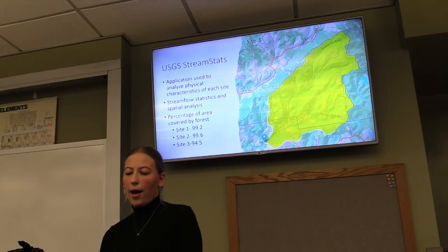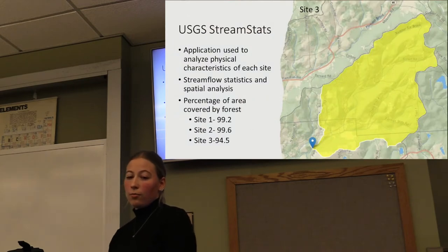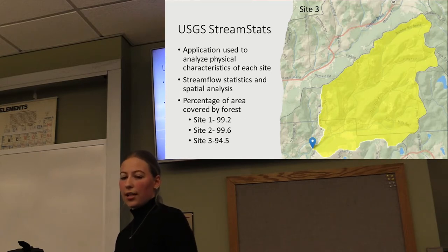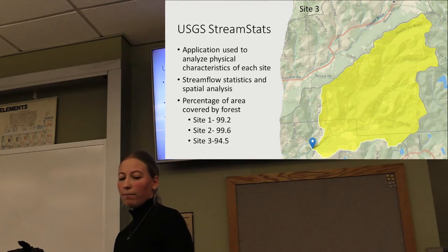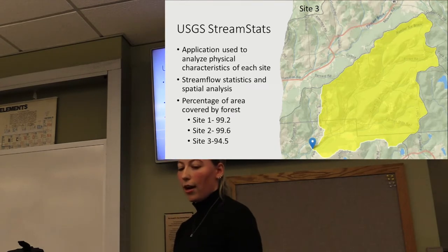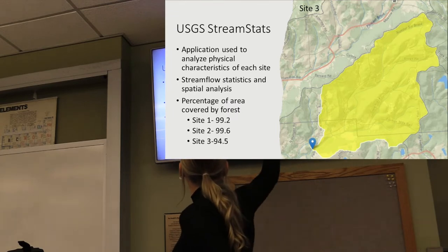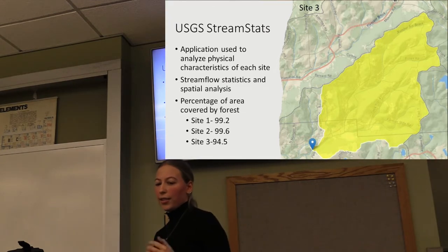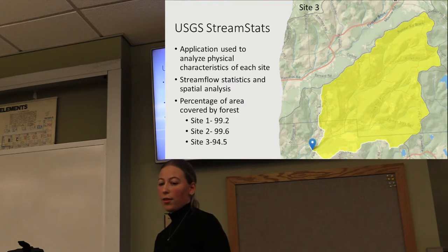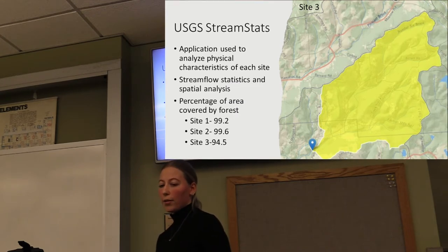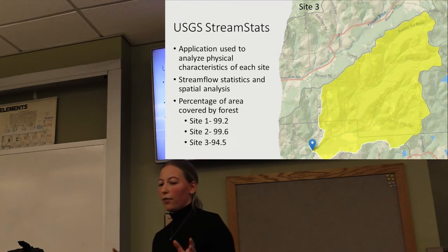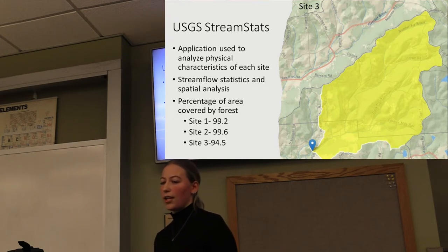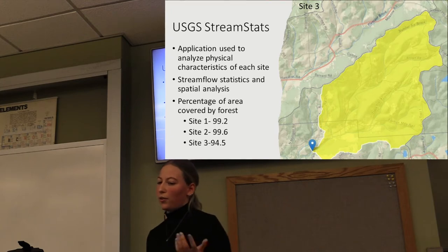We also used the USGS StreamStats application to analyze physical characteristics of each site. It gave insight on stream flow statistics and spatial analysis. One thing it showed was the percentage of area covered by forest at each site. This is a picture of that from site three. The first two sites had very high forest cover — 99.2% and 99.6% respectively — as expected. The third site was slightly lower at 94.5%. Even though the difference wasn't huge, there was a difference in road usage and human traffic, since the first two were on seasonal roads on state lands and the third is a regular road.